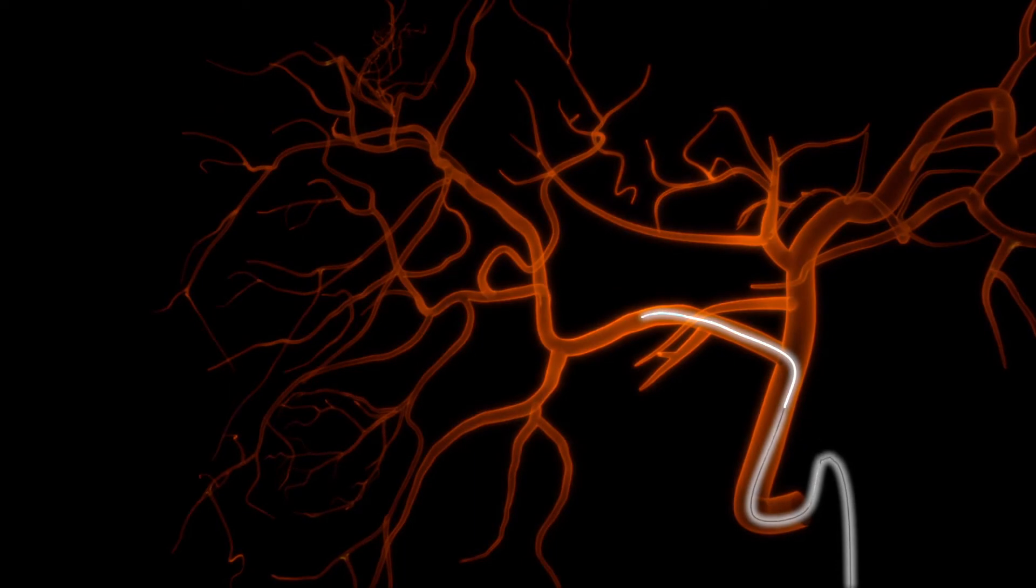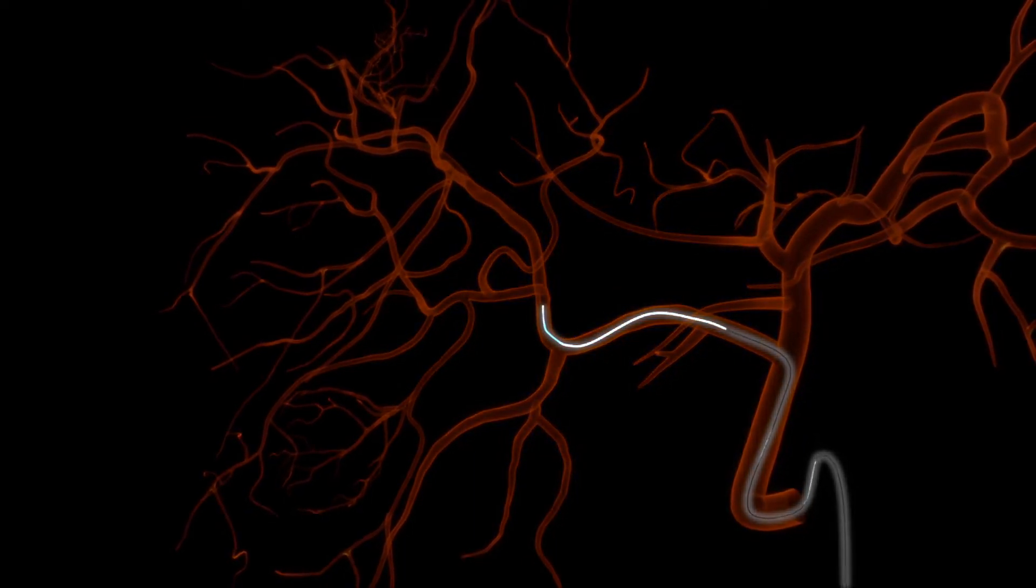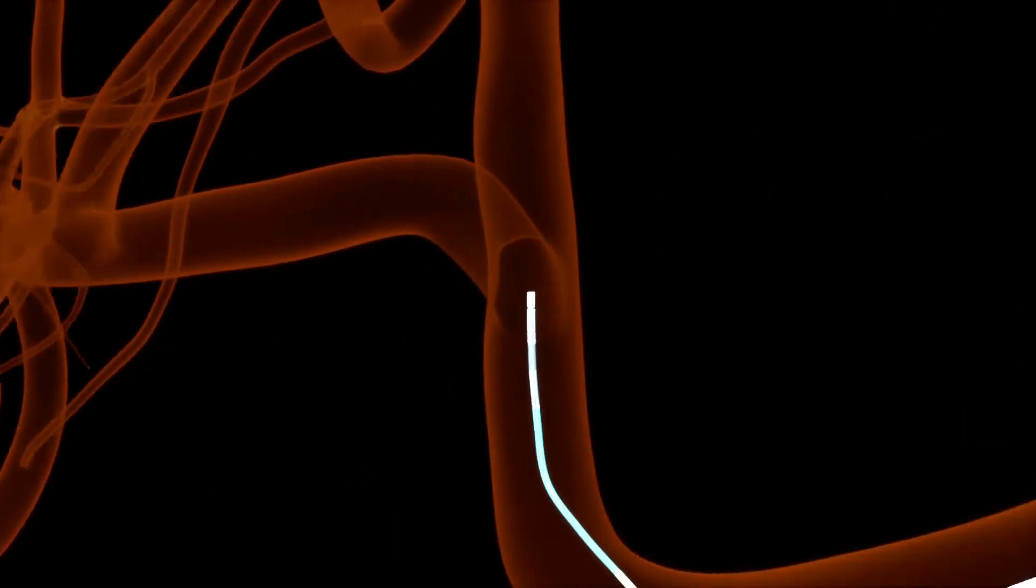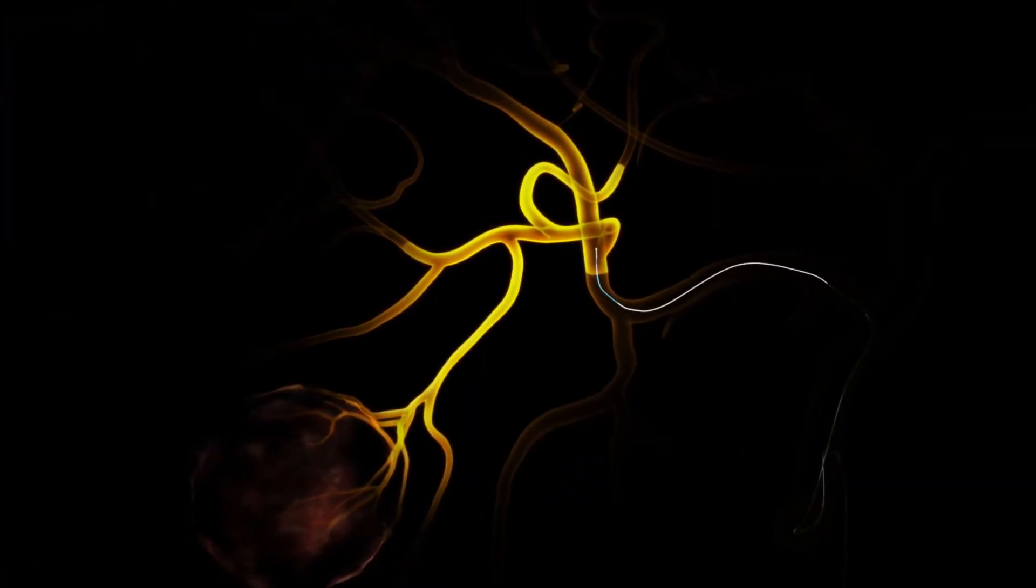While watching under fluoroscopy, carefully advance the Swift Ninja through the vessels. The tip may be articulated to the same angle of the vessel branches to help direct the guidewire and Swift Ninja through the vasculature.